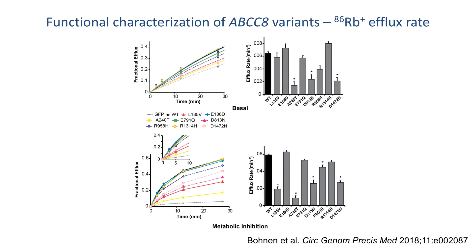Next, the authors used rubidium flux assays to provide quantification of channel activity using 86Rb+ efflux as a measure of macroscopic K-ATP conductance from a population of intact cells. In the various permutations of the experiments shown, all but one of the mutants showed reduced channel activity. Of note, the one outlier had shown reduced K-ATP conductance in the patch clamp experiments. Thus, when combining results from both functional assays, there was a significant decrease in basal and/or maximal channel activity for all SUR1 mutants associated with PAH that were functionally tested.